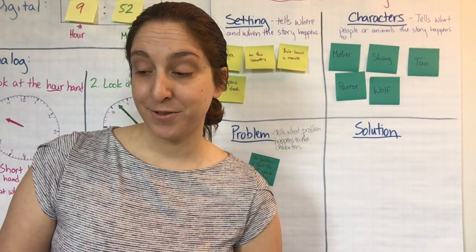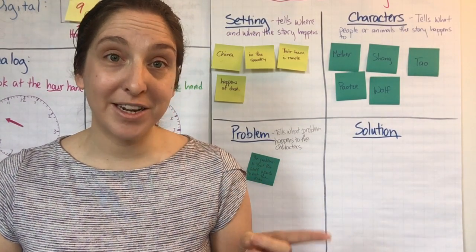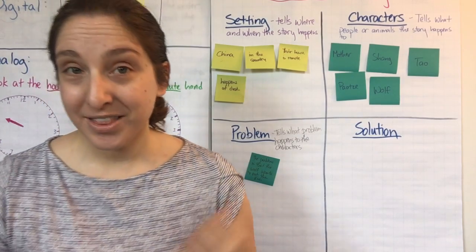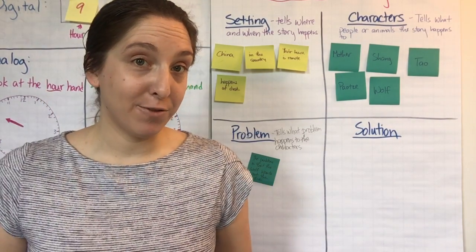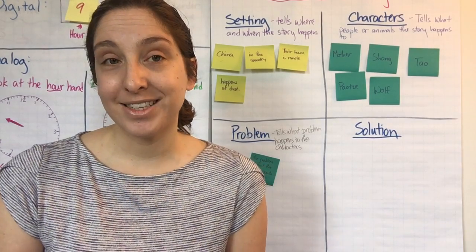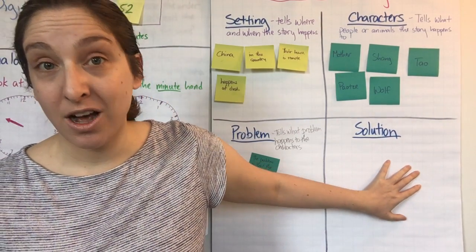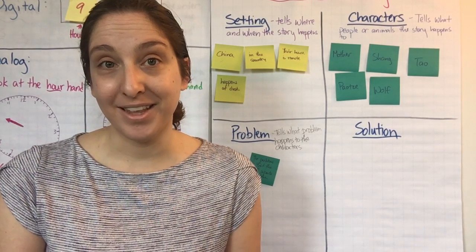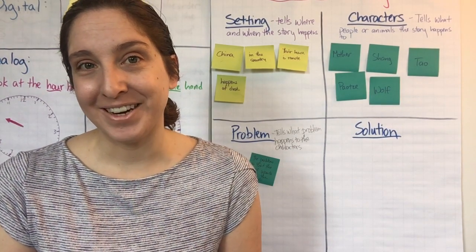So that's actually where we're going to leave off for today. We haven't quite figured out how Shang and her sisters are going to solve this problem. They're at the top of the tree, but they can't stay there forever. So tomorrow we're going to finish reading the book and see what Shang's solution is to solve their problem of the wolf wanting to eat them. All right, that's it for today. See you later, third graders.